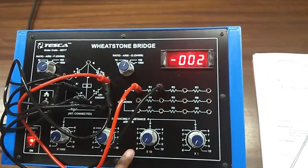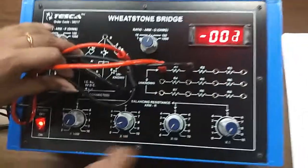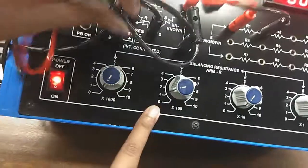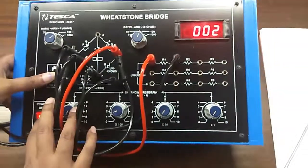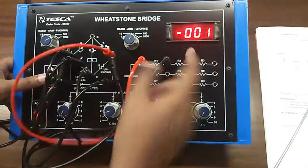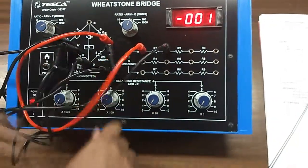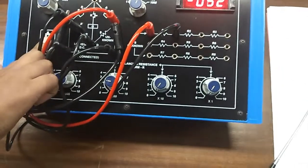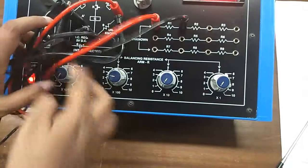I have turned on the key and I am setting this to 100. Now, I am pressing the switch K1. You can see there is no deflection, but if we select another value, we can see the deflection in the galvanometer.